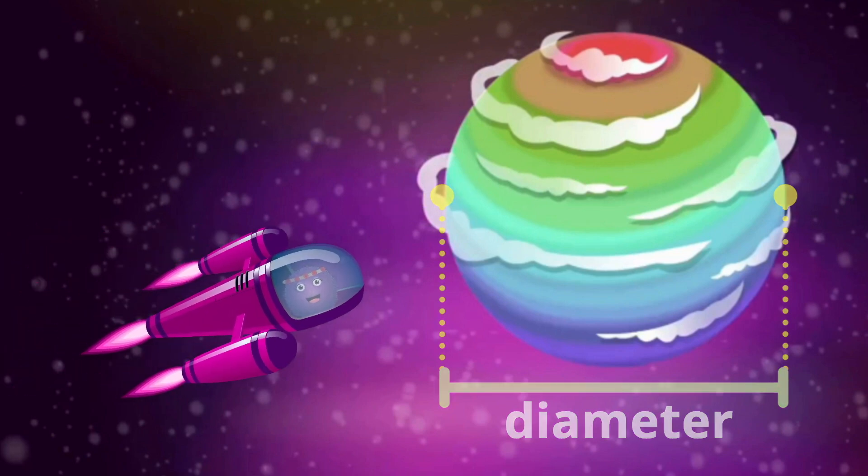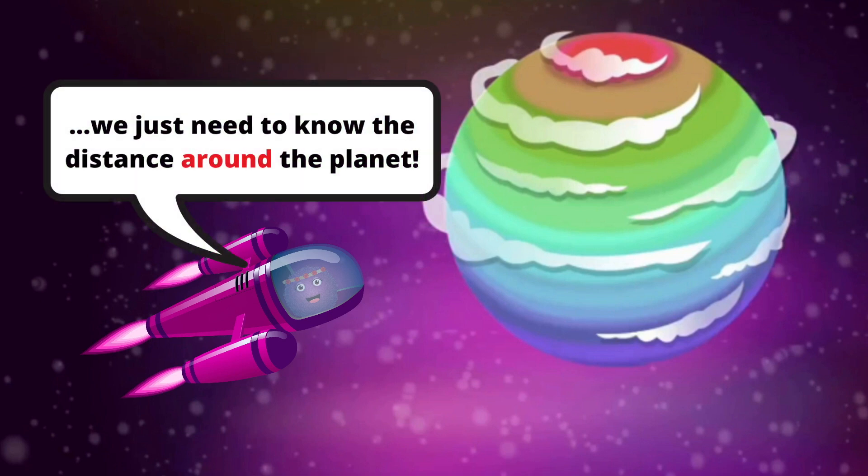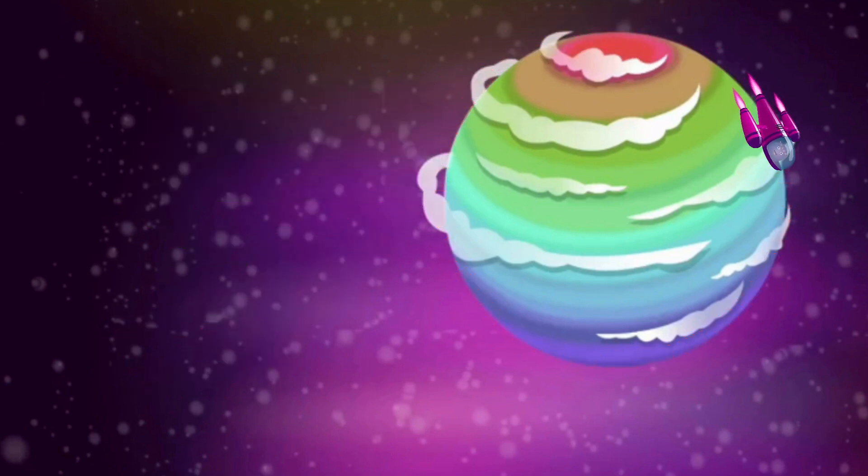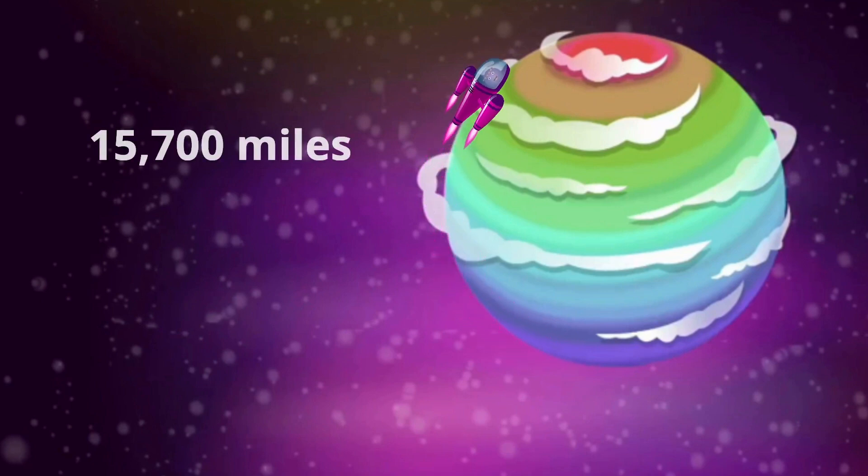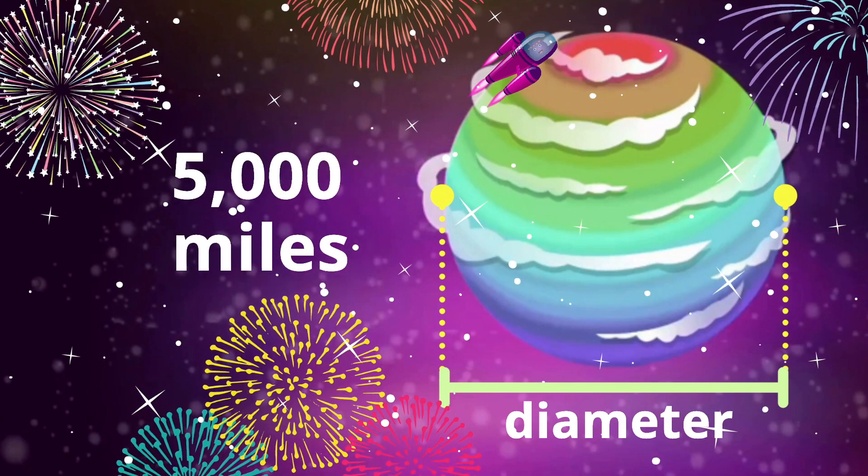Then, Violet remembered something and told the rest of the fuzzes. We can use pi to solve this mystery. We just need to know the distance around the planet. She flew all the way around the planet Smeborg in her spaceship and measured the circumference. Then, she used her knowledge of pi and solved the mystery of the Smeborg diameter.